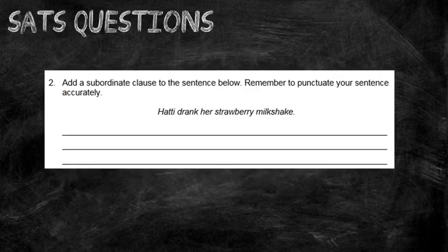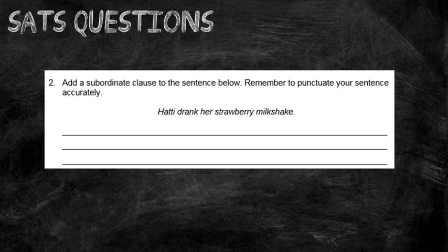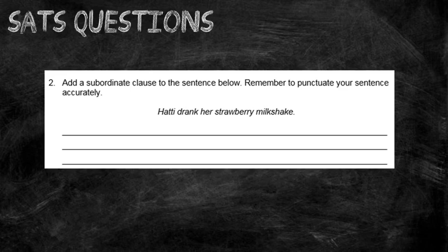The last question: add a subordinate clause to the sentence below, and remember to punctuate your sentence accurately. You can put your subordinate clause at the beginning, within, or at the end of the sentence. Remember the clause you add must begin with a subordinating conjunction — if you can't remember them, pause and go back to where they were shown at the bottom of the screen. Well done today, guys! If you found this video helpful, give it a thumbs up, like it, and share it with your friends to help as many children as possible.